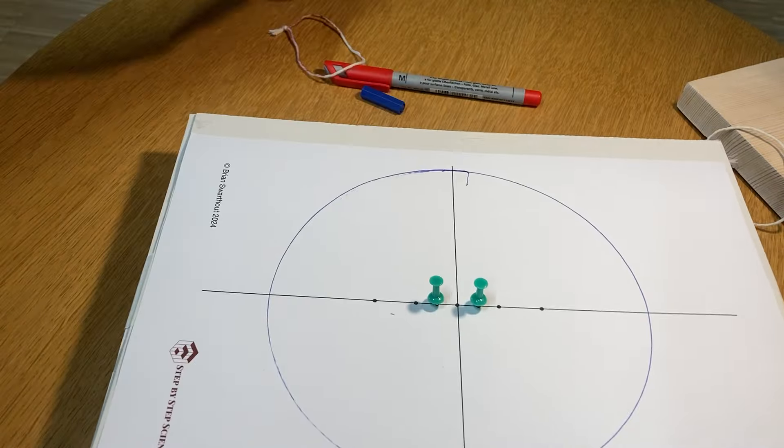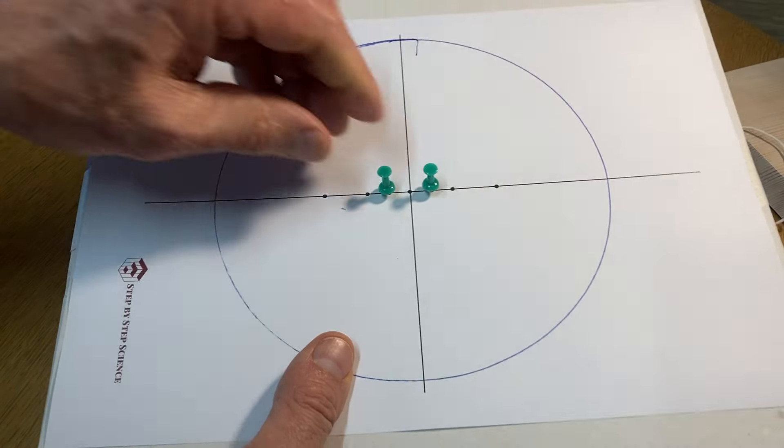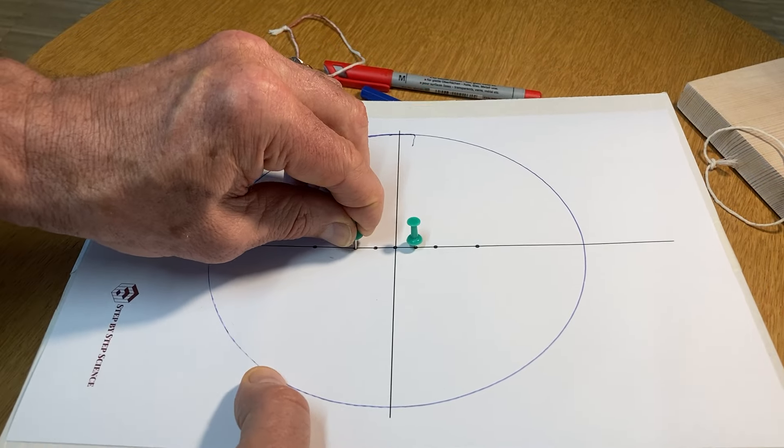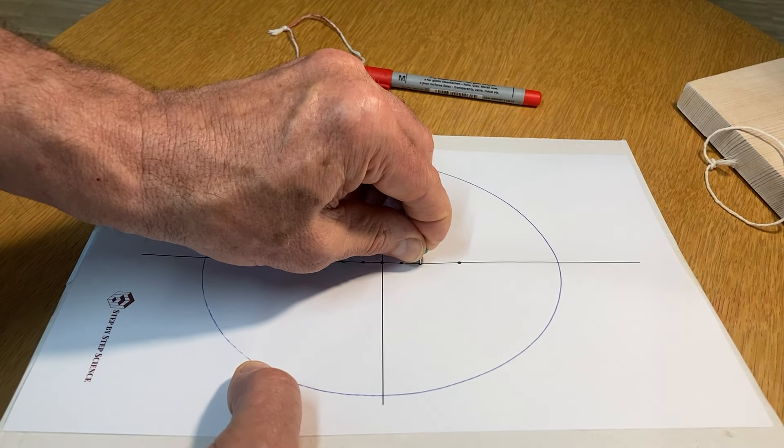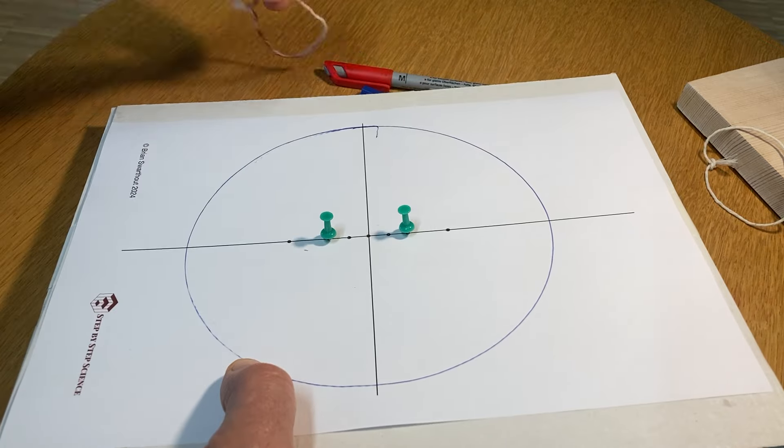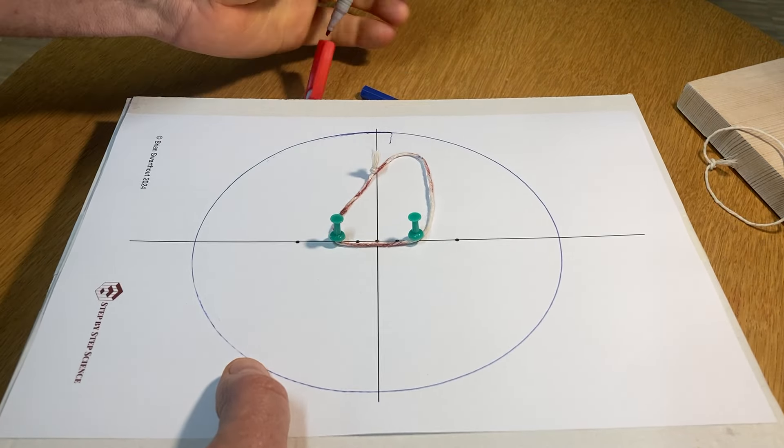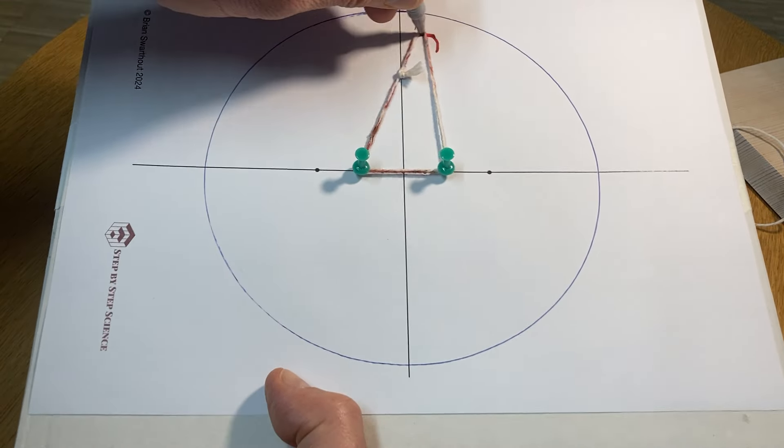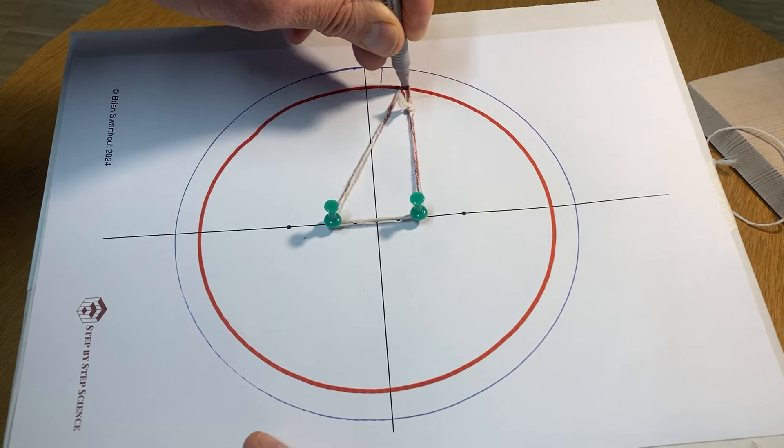It takes a little bit of practice but once you get it figured out, pretty straightforward. Now I'm going to take the pins and move them so each is now two centimeters away from the center of the page. I have another color just to show the contrast. Put the string on there again, I'm going to take my red pen this time and draw my second ellipse. You can see I get a nice ellipse and there you go, that's the second ellipse.